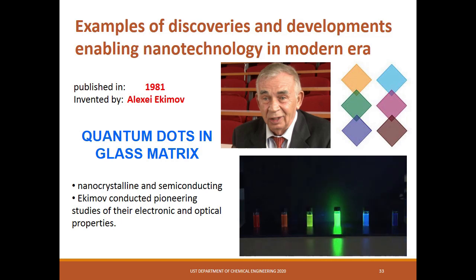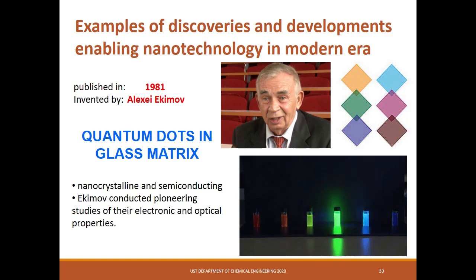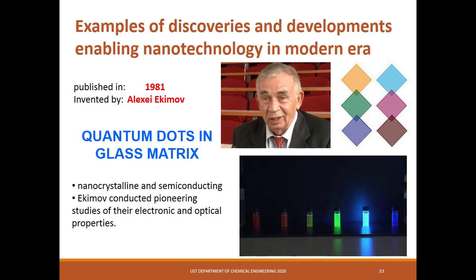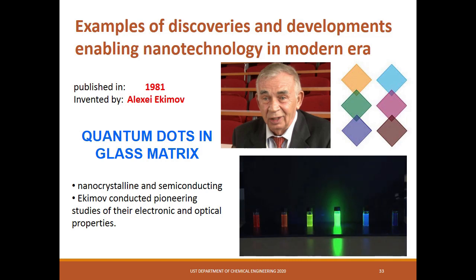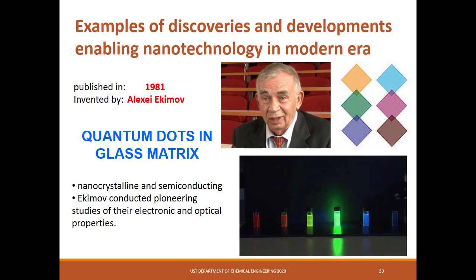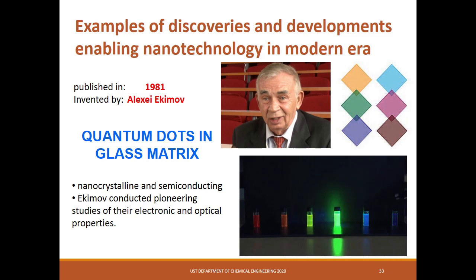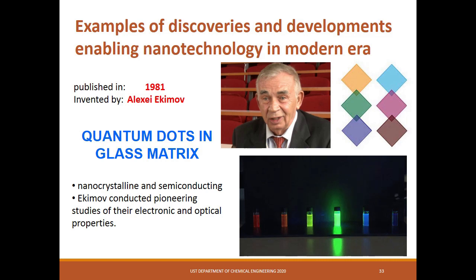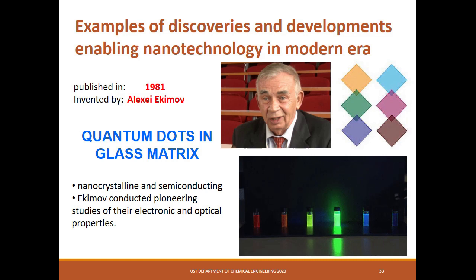Quantum dots are nanoscale crystals that can transport electrons. When UV light hits these semiconducting nanoparticles, they can emit light of various colors. These artificial semiconductor nanoparticles have found applications in composites, solar cells, and fluorescent biological labels. At the end of the 1970s, Russian physicist Alexey Ekimov synthesized nanocrystals of copper chloride and cadmium selenide in a multiglass matrix, observing fluorescence in a gradient of colors. These observations were published in 1980.